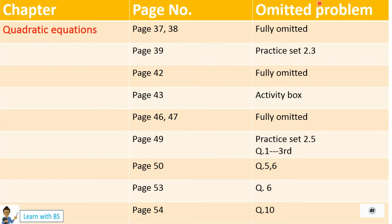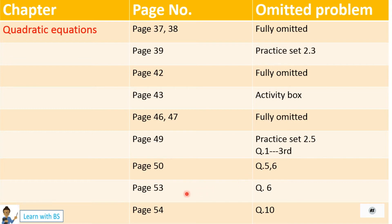Now let's come to the next chapter: Quadratic Equations. I have given page numbers and the problems omitted from this chapter — leaving those aside, the remaining sums you have to do. Page numbers 37, 38 fully omitted. Page 39, Practice Set 2.3 is omitted. Page 42 fully omitted. Page 43, the activity box is omitted — not for exam purposes. Pages 46, 47 fully omitted. Page 49, Practice Set 2.5, Question 1's third sub-question is not to be done. Page 50, Questions 5 and 6 are not to be done. Page 53, Question 6 is omitted. Page 54, Question 10 is omitted.